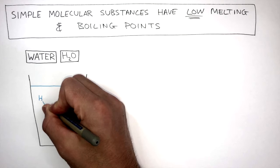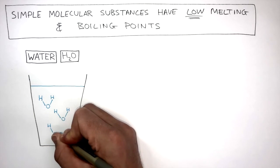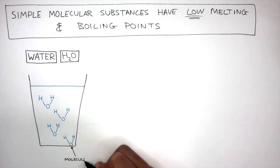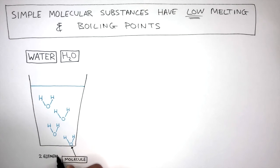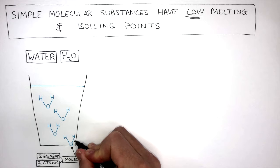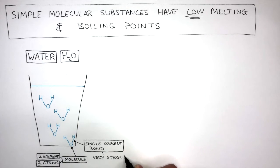This is a glass of water which has been simplified to show the structural formulae of four water molecules. This is one water molecule. It's made up of two elements containing three atoms. This line between the hydrogen and oxygen atom represents a single covalent bond which is very strong, which needs a lot of energy to break.